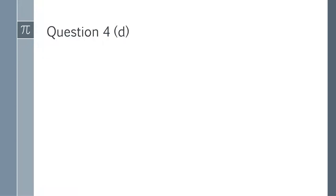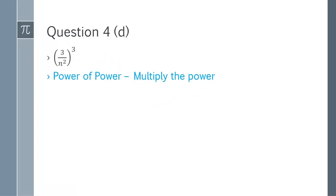Question 4d: (3/n^2)^3. Expand using the power of power rule: 3^3 = 27 in the numerator, and n^(2×3) = n^6 in the denominator. The answer is 27/n^6.